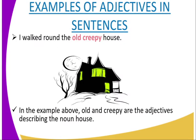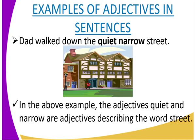Another example: 'I walked around the old, creepy house.' In this sentence, the noun is 'house' and the adjectives are 'old' and 'creepy.' As you can see from the picture, 'old' and 'creepy' are the adjectives describing the noun 'house.'